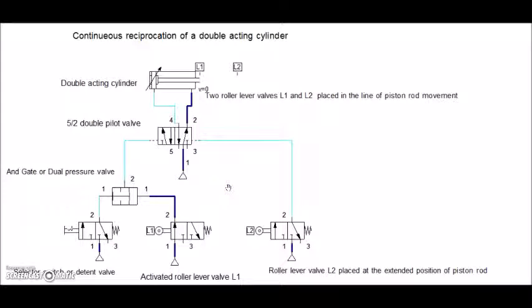This is the first stage of simulation where the piston rod is activating this roller lever valve and the signal is reaching the dual pressure valve or AND gate. The AND gate is not responding by sending the output signal as it has a signal on one side only. In this 5x2 double pilot valve, compressed air is going through this passage and through this port keeping the piston at its home position.